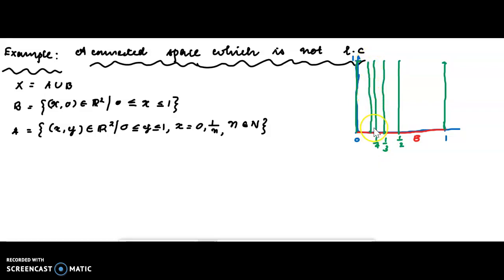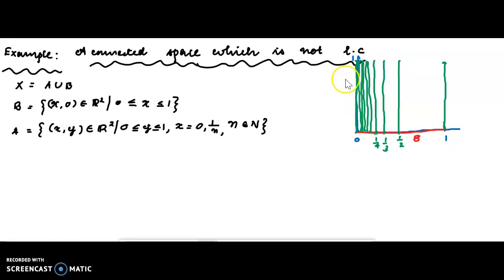Continuing with x equal to 1/5, 1/6, 1/7 — each giving a straight vertical segment from 0 to 1. This structure with vertical segments at x = 1/n together with the x-axis segment and the y-axis segment is called the comb space.